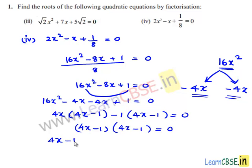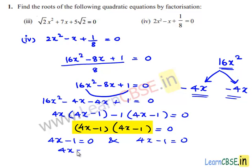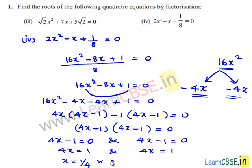Taking (4x minus 1) as common, the remaining terms give (4x minus 1)(4x minus 1) equals 0. So 4x minus 1 equals 0 and 4x minus 1 equals 0, giving 4x equals 1 and x equals 1/4 and x equals 1/4. Therefore this equation has repeated roots: 1/4 and 1/4.